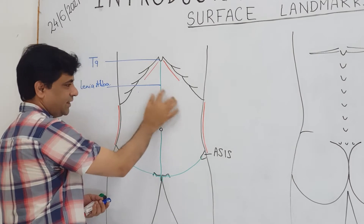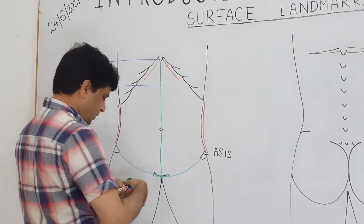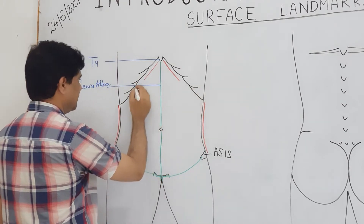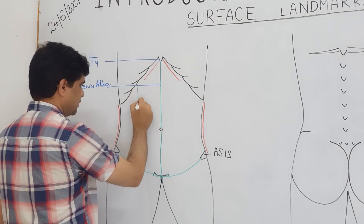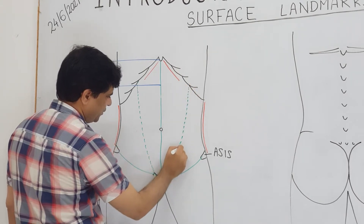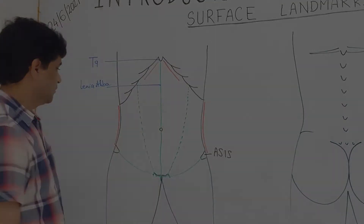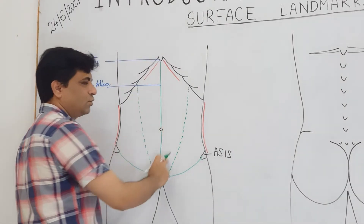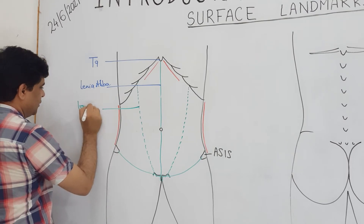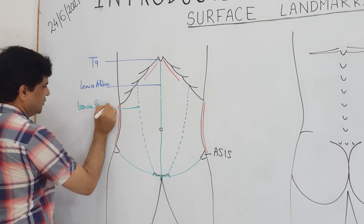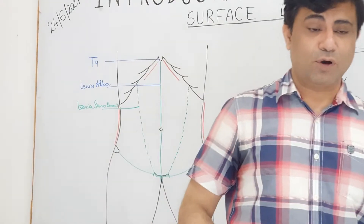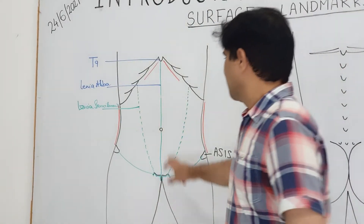The rectus abdominis is a paired muscle. The lateral margin of the rectus abdominis, which is enclosed within the rectus sheath, also forms an oblique line. That line is somewhat semilunar because of the contour of the rectus abdominis, and that is why this line is called linea semilunaris - the lateral margin of the rectus abdominis or the lateral margin of the rectus sheath.